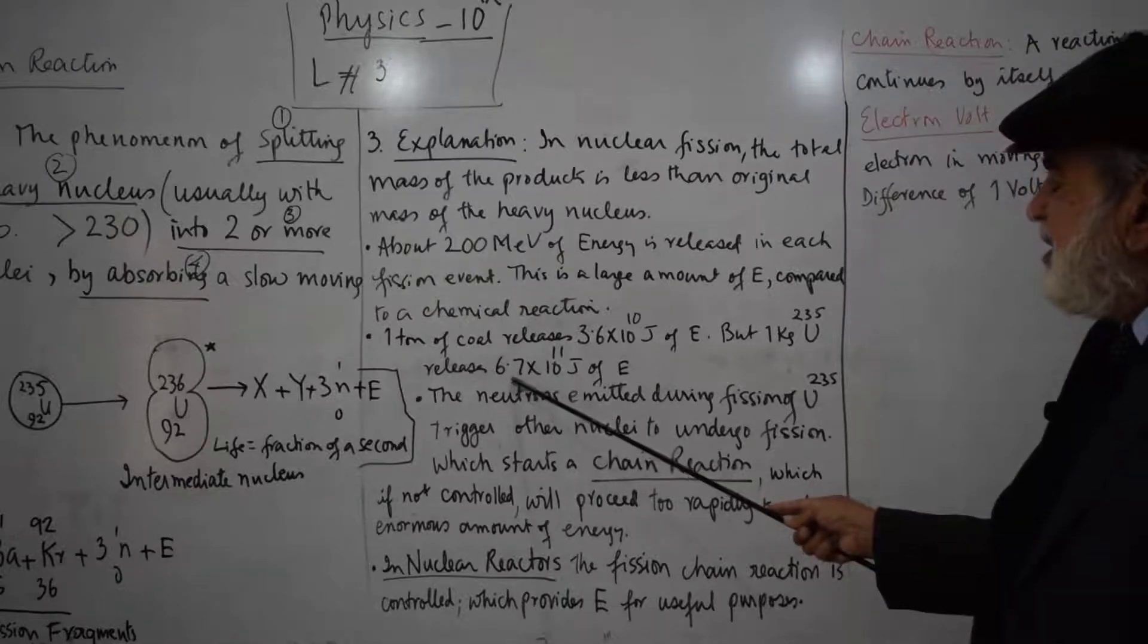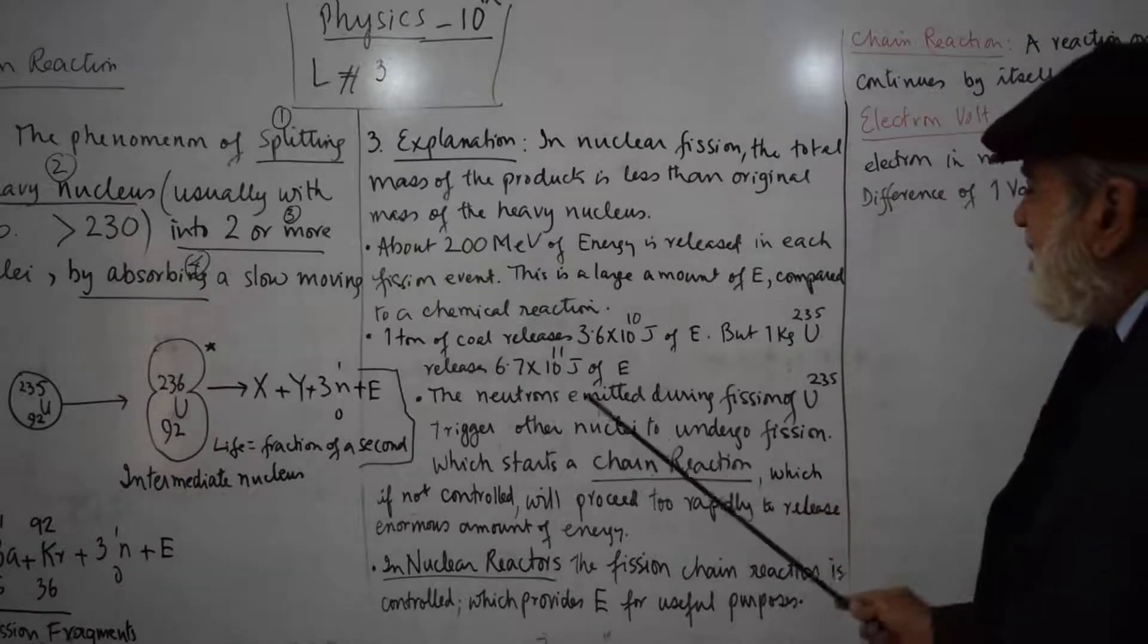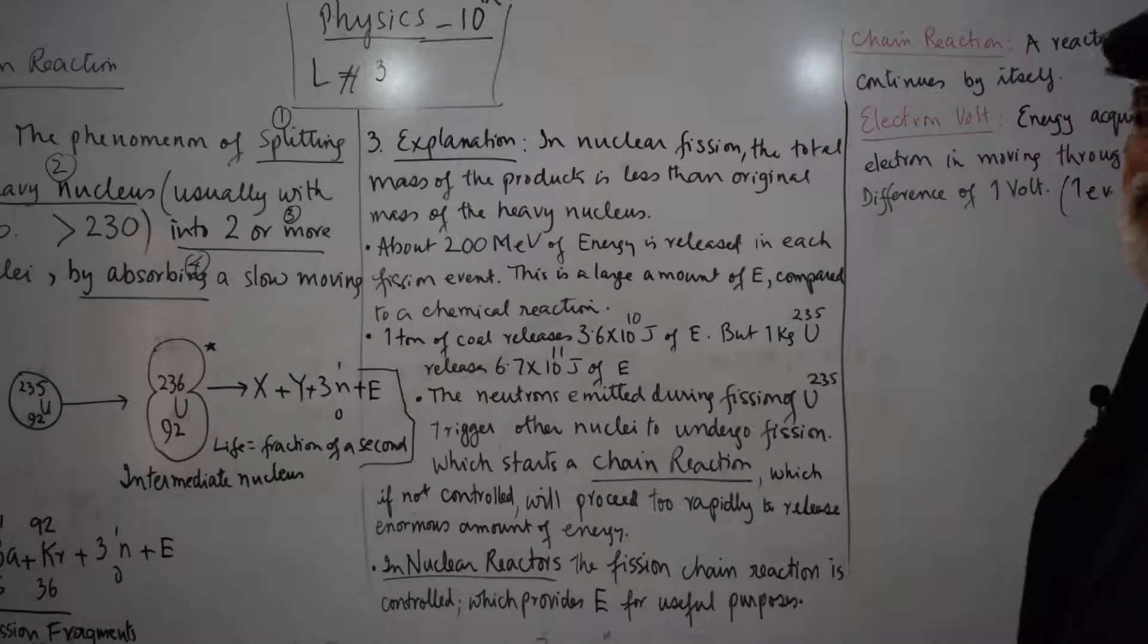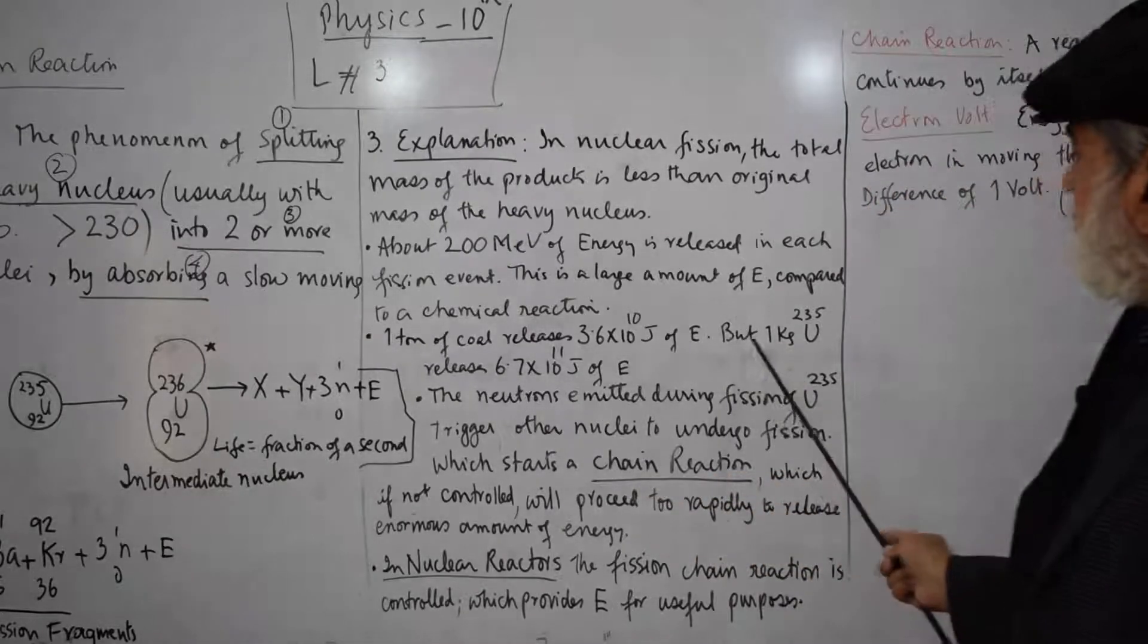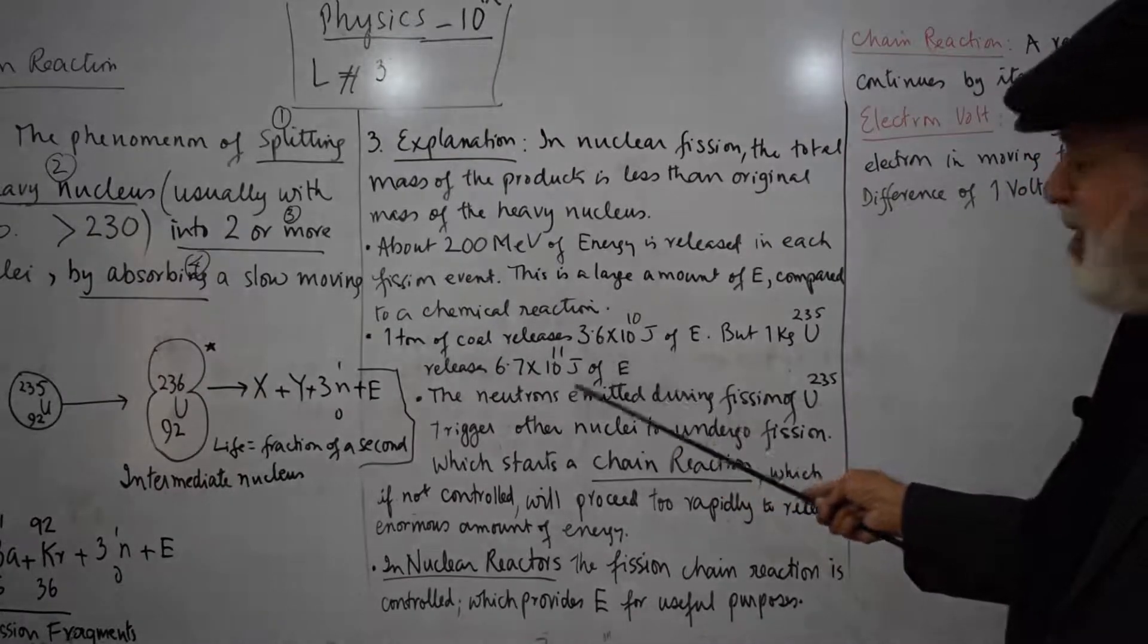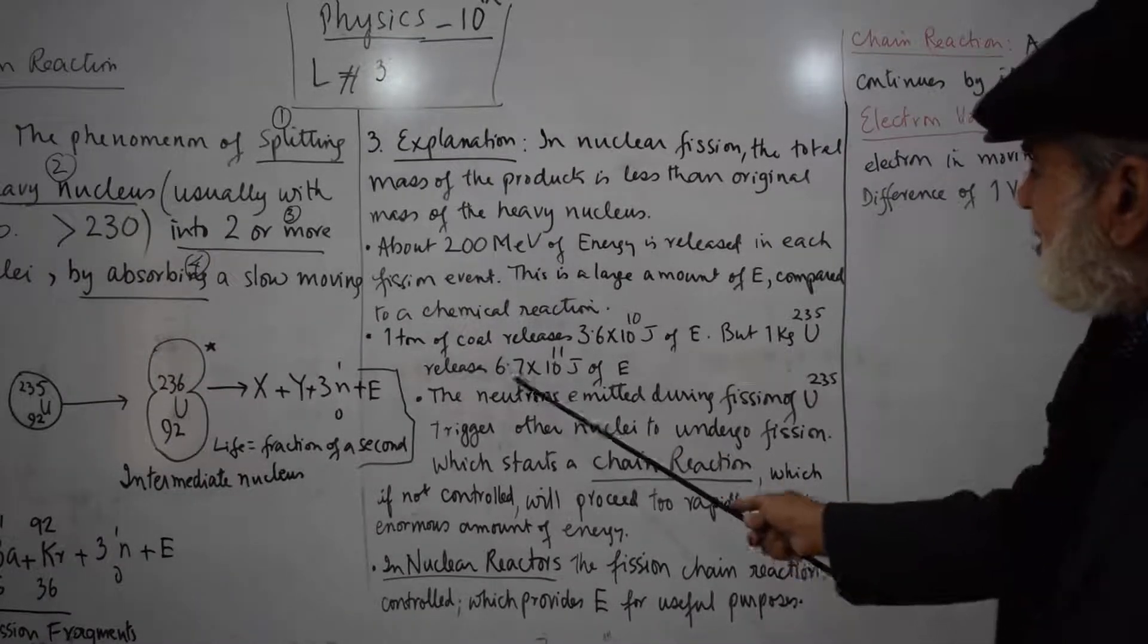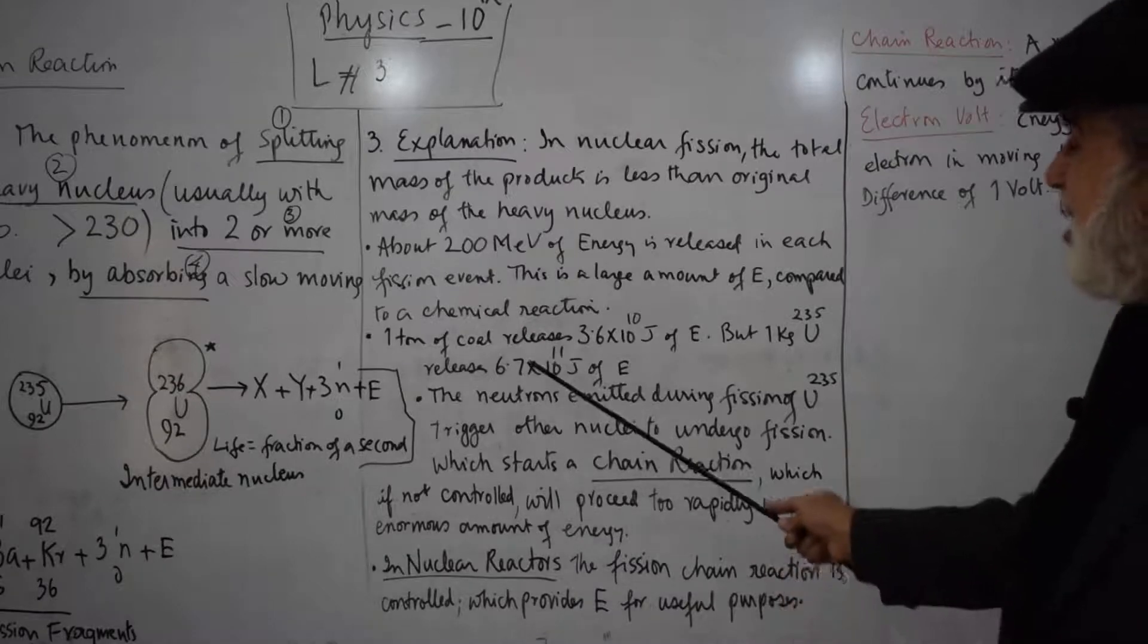But one kilogram uranium releases 6.7 × 10^11 joules of energy. One kilogram versus one ton. So you know, this is about a thousand tons of coal releasing this much energy, but one kilogram uranium releases so much extra energy.